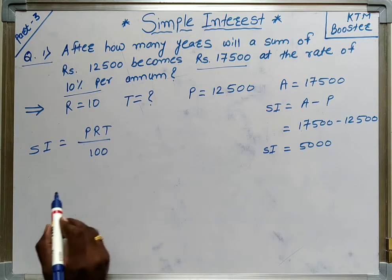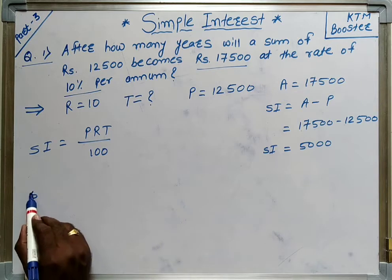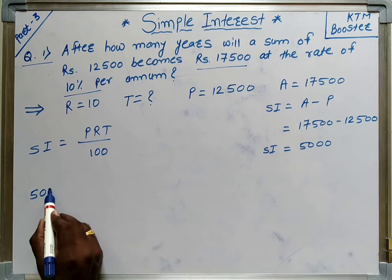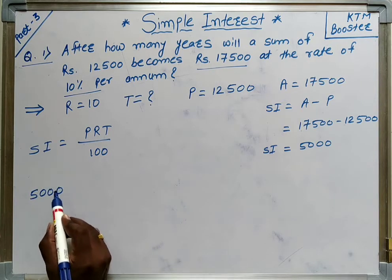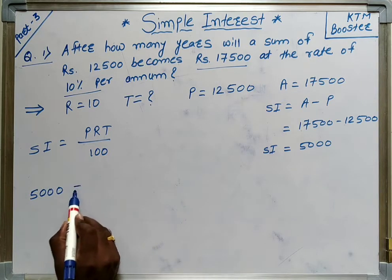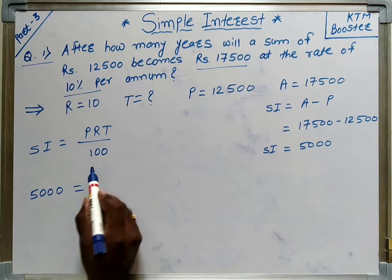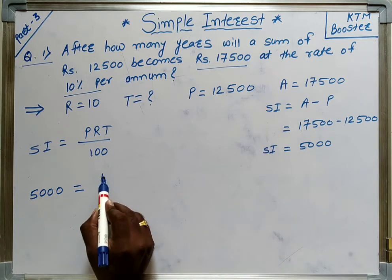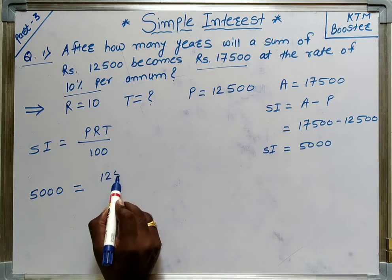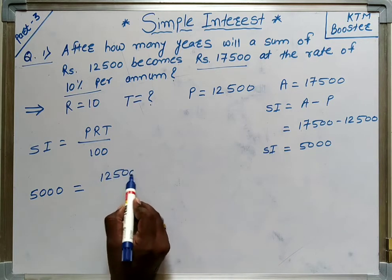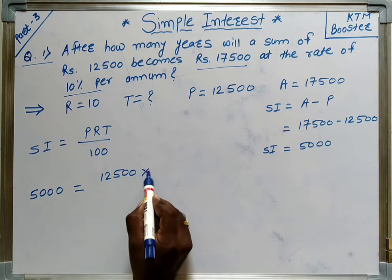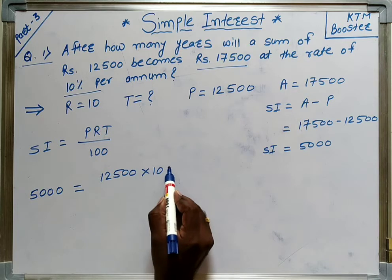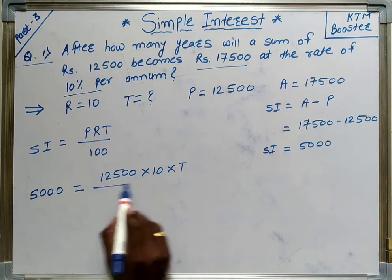SI is 5,000. What is P? P is given, that is 12,500. What is R? That is 10. And T we have to calculate.